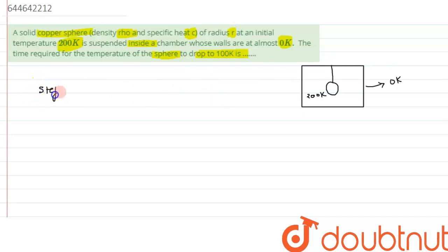For that we can use Stefan's law. We can write energy radiated per unit time as dQ/dt, and that equals σAT⁴ minus T₀⁴, where T is the temperature of the sphere and T₀ is the temperature of the chamber, which is zero kelvin.